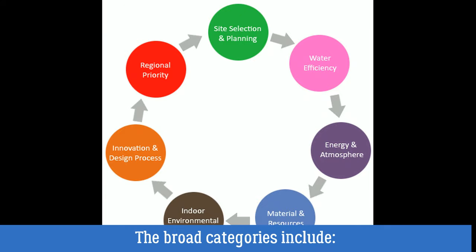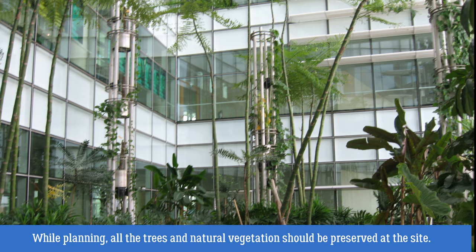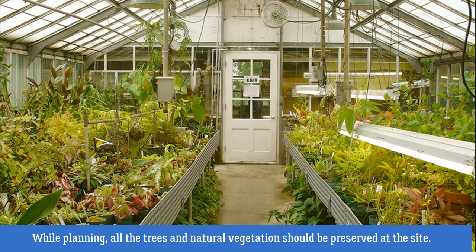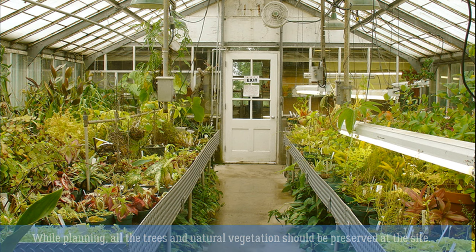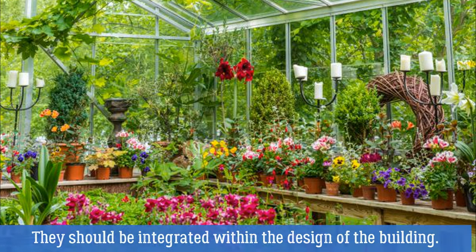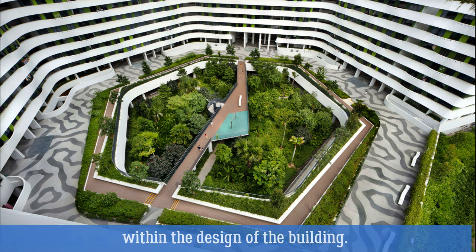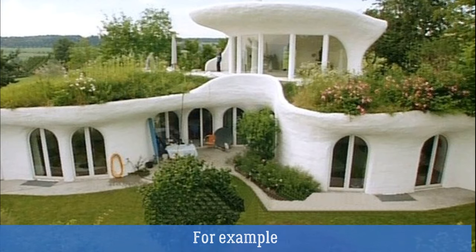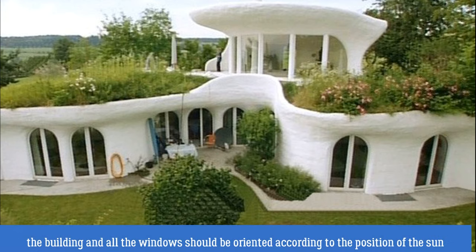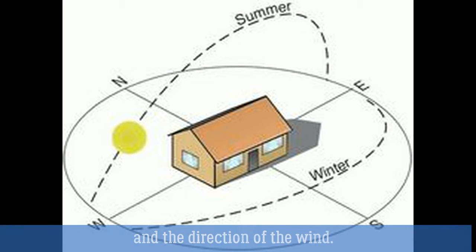The broad categories include site selection and planning. While planning, all the trees and natural vegetation should be preserved at the site and integrated with the design of the building. Passive architecture techniques should be integrated within the design — for example, the building and all the windows should be oriented according to the position of the sun and the direction of the wind.